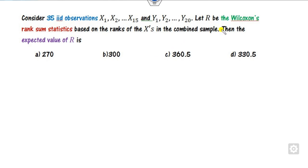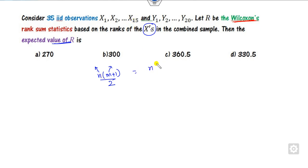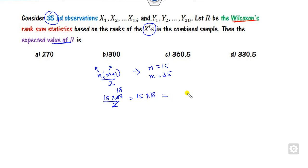For the next question, again on the Wilcoxon test, find the expected value of R. Using E(W) = n(m+1)/2, where n is the number of elements in x and m is the total number of elements — here m is given as 35. Substituting: 15 multiplied by (35 + 1)/2 = 15 × 18 = 270. The right answer is 270.